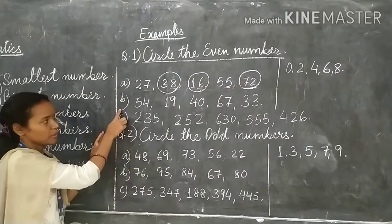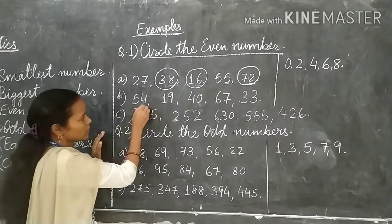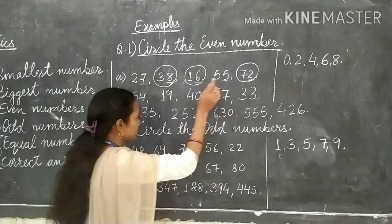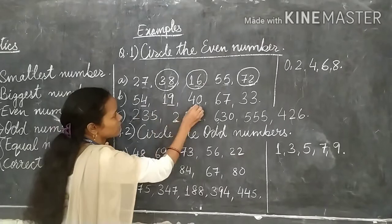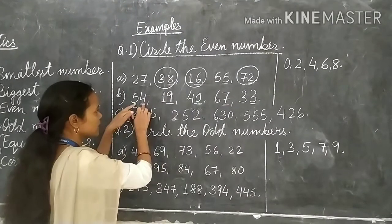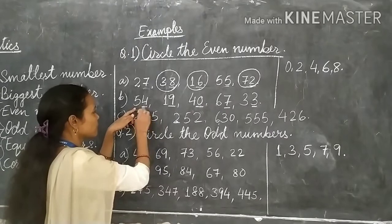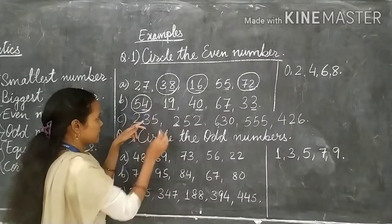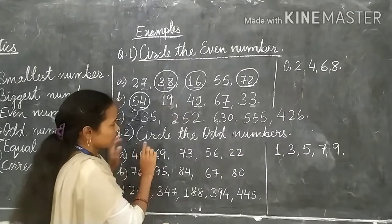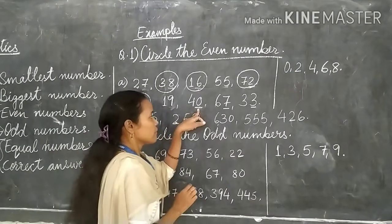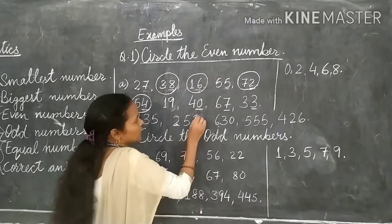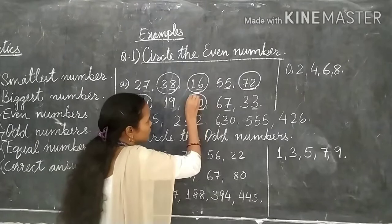Question number B: 54, 19, 40, 67, 33. See the numbers which are in the place of 1's. 4 — 4 is an even number, so 54 will be an even number. 9 is an odd number, so 19 is an odd number, we will not circle this. 40 — 0 is an even number, so we will circle 40.